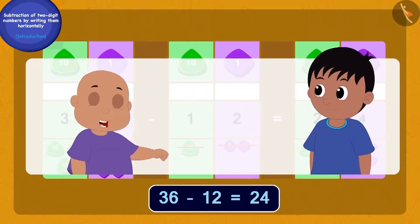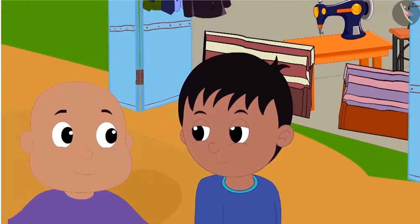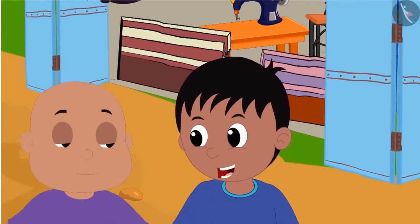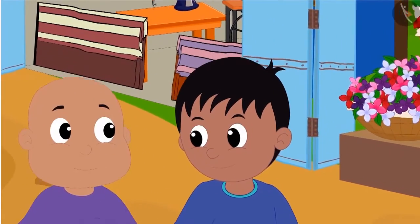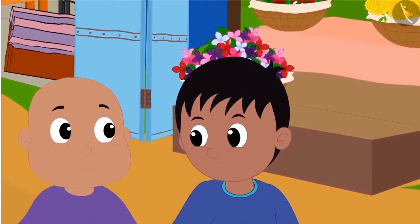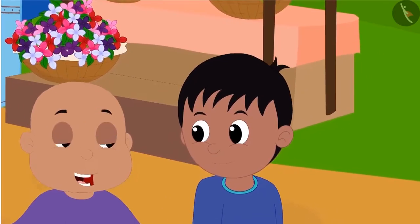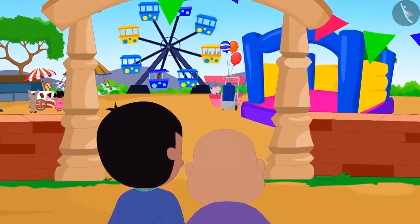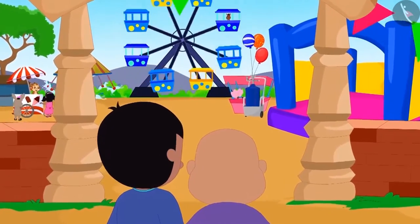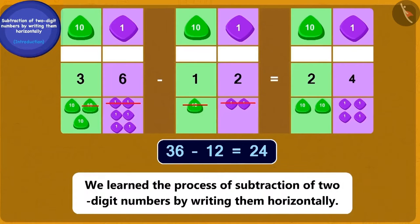Bablu explained the process of subtraction to Raju in exactly the same way. Raju became very happy and said: Bablu, I have understood now. I will be able to solve the subtraction sums easily. Bablu said: let us go to the fair and this time why don't you solve some subtraction puzzles for me. Children, in this lesson we learned the process of subtraction of two-digit numbers by writing them horizontally.